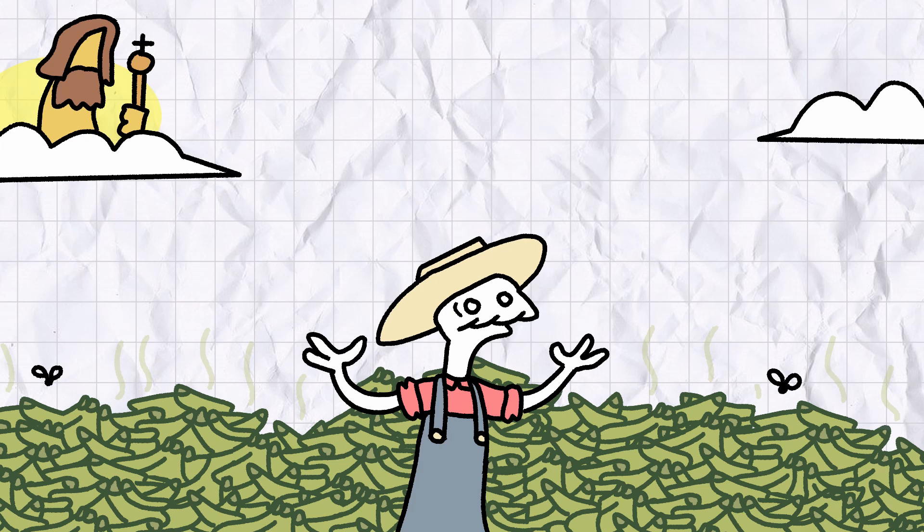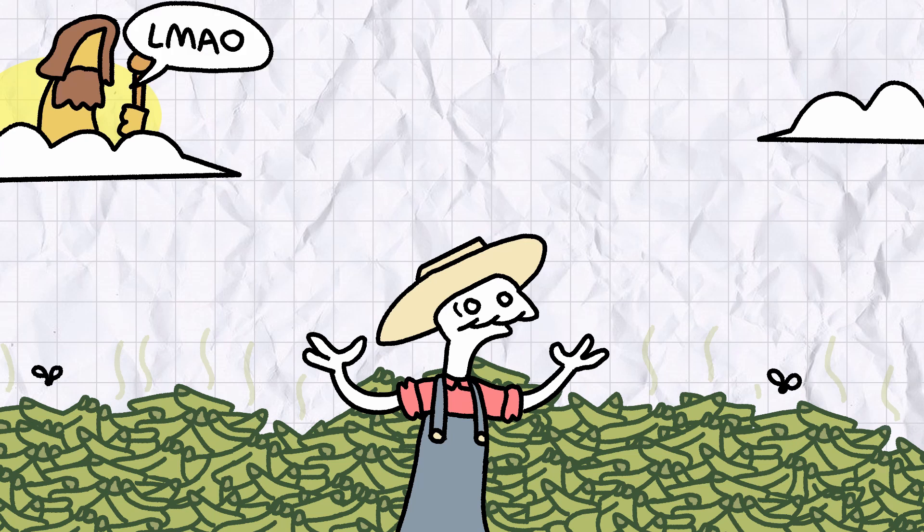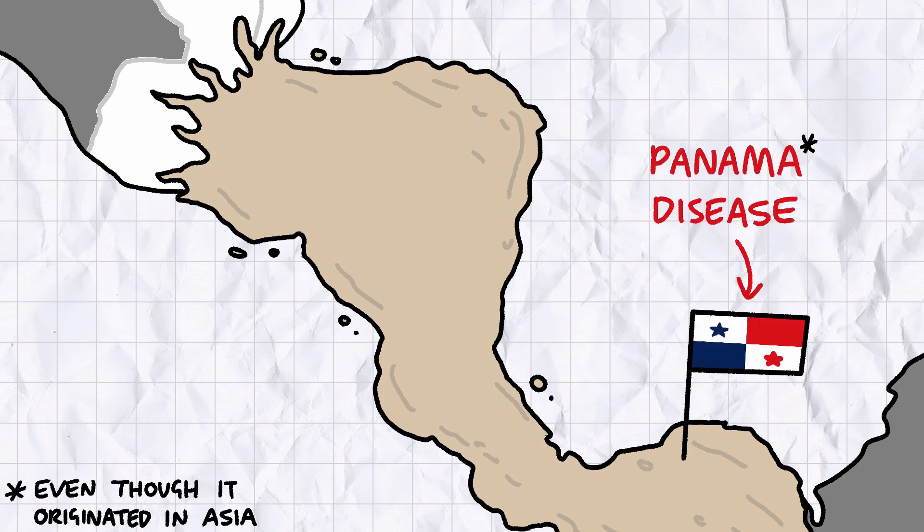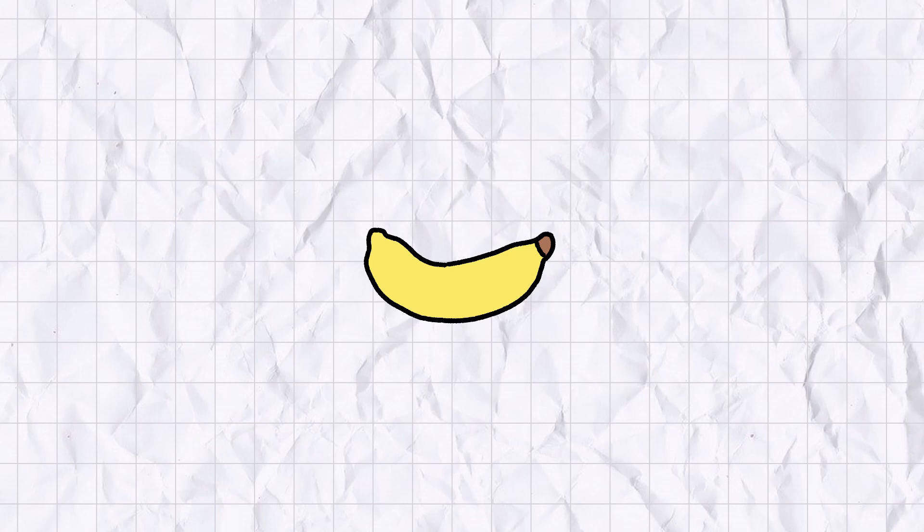But unfortunately, Sweet Nana Jesus is a cruel and capricious god. In the 50s, Central America was hit by a fungal affliction now known as Panama disease, and the banana trade was nearly wiped off the face of the earth. By 1960, Big Mike bananas were almost totally unviable for commercial export.